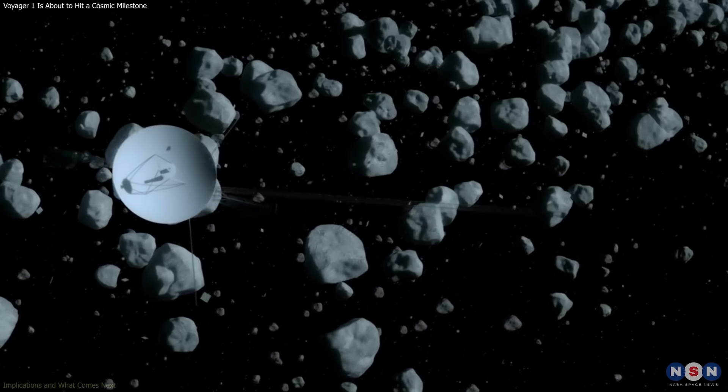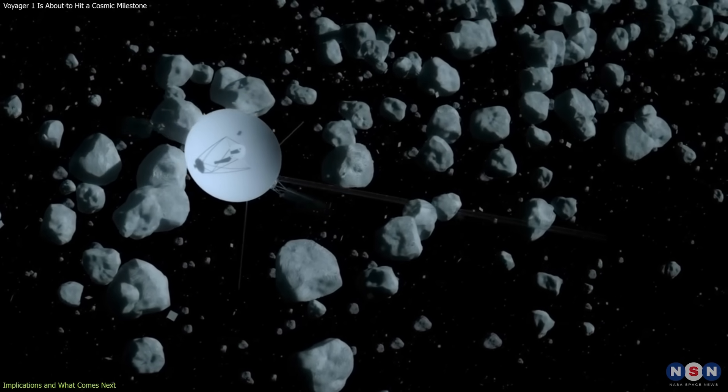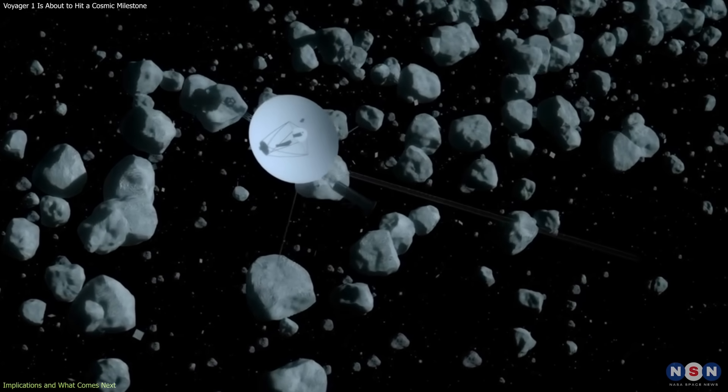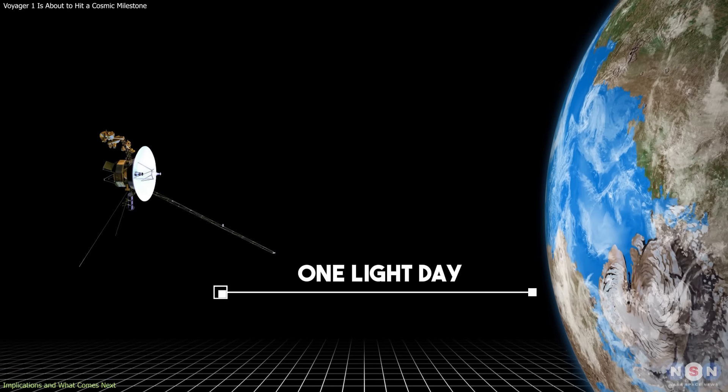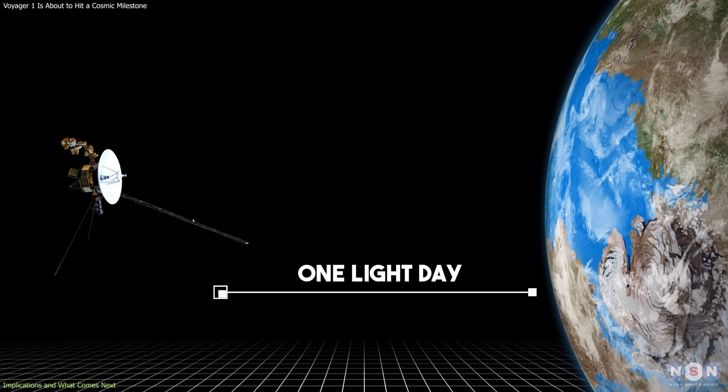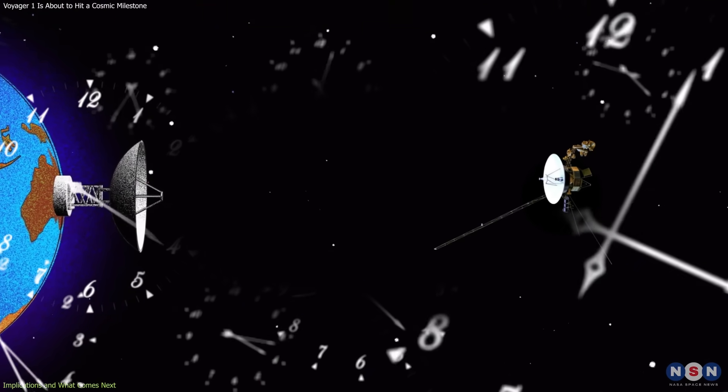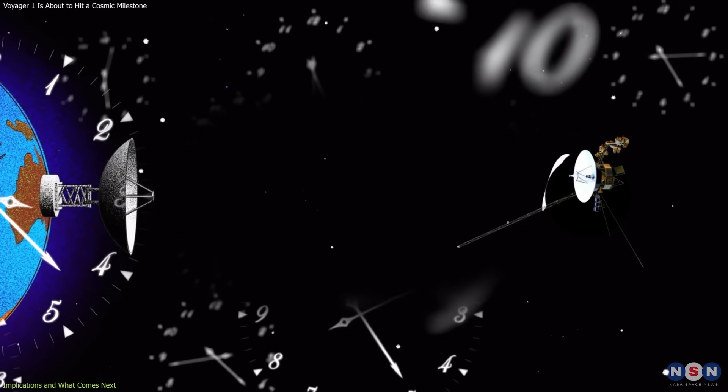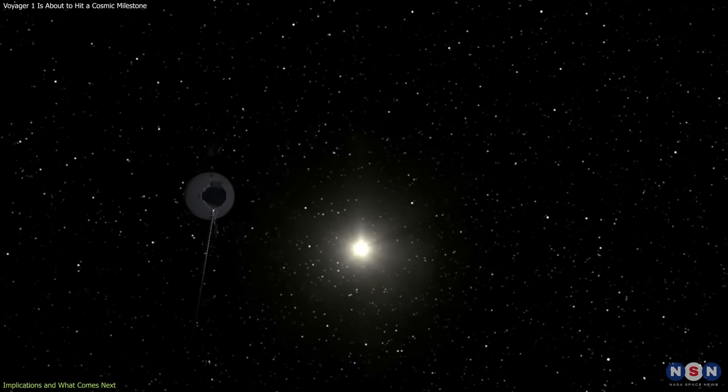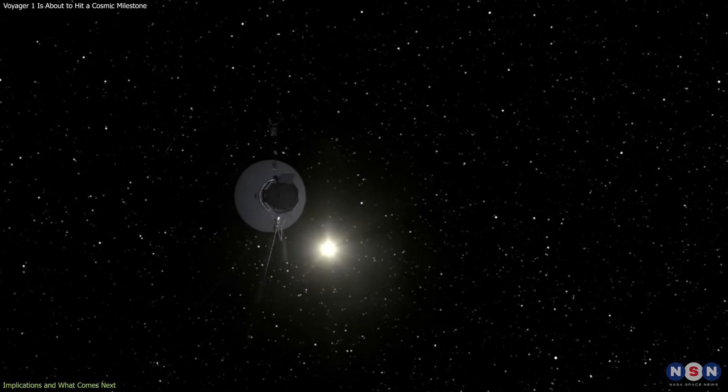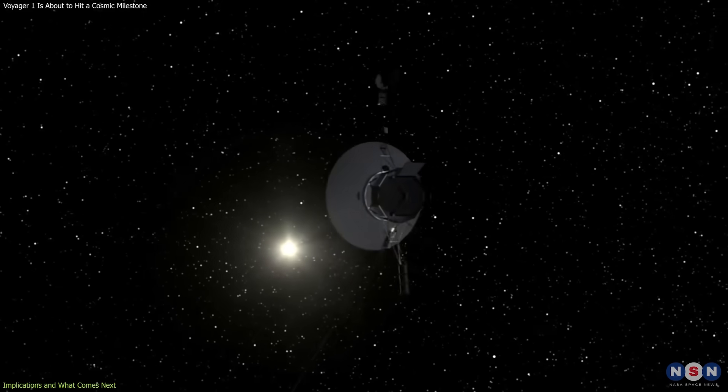Voyager 1's upcoming milestone illustrates the scale of interstellar communication. At one light day away, engineers can no longer make quick corrections. Each instruction must be planned days in advance, and every response takes nearly 48 hours to confirm. It's a slow conversation across time and space, one that depends entirely on patience and prediction.